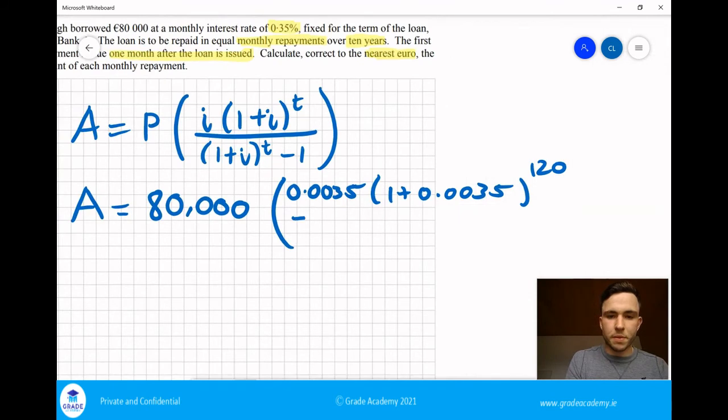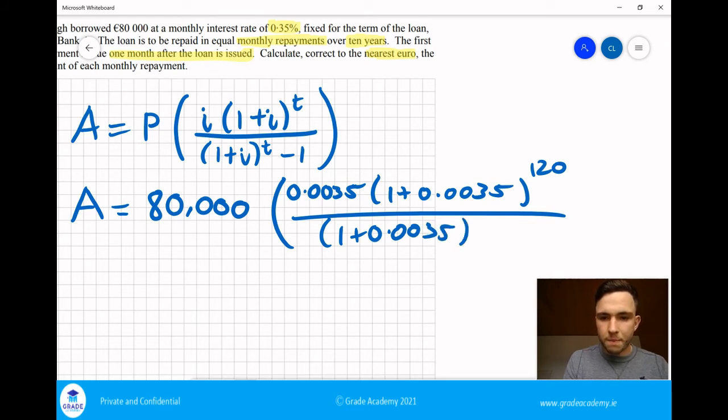Okay, I'll divide it by one plus i, which is 0.0035. And yeah, so again, T is 120 minus one.